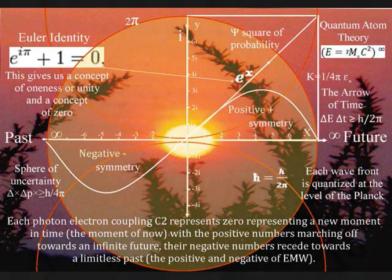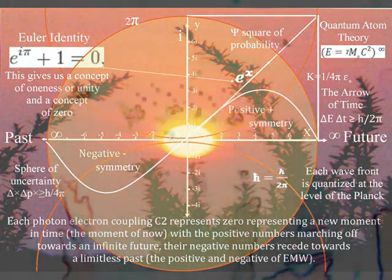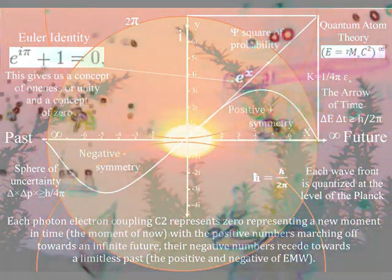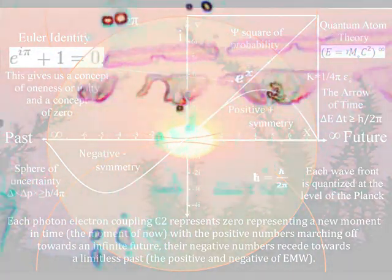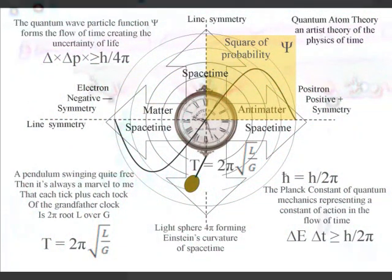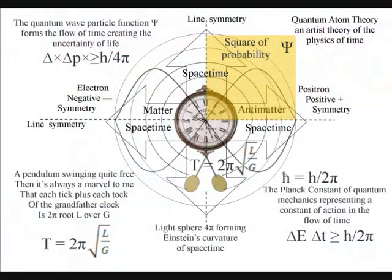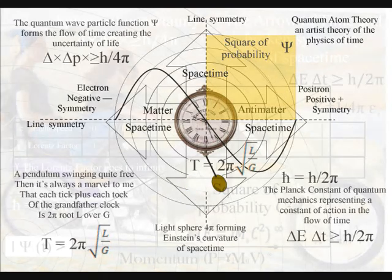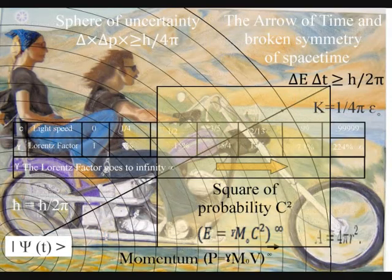We see and feel this process of continuous energy exchange, continuous change, as a flow of time itself. This universal process of continuous change, continuous creation, forms the mathematical uncertainty of quantum mechanics and the uncertainty we have in everyday life.